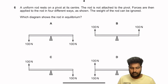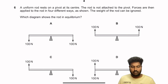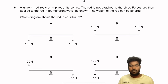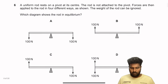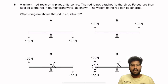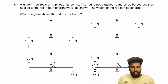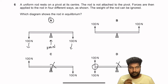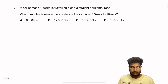Question 6: A uniform rod rests on a pivot at its center. Forces are applied in four different ways. For equilibrium, the moments on both sides must be equal. Option A has 100 N on both ends — balanced. Option B lifts the rod. Since both ends have 100 N balanced by the pivot supporting 200 N, A is the right answer.